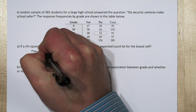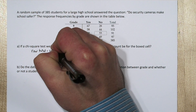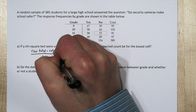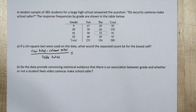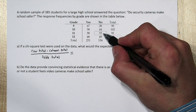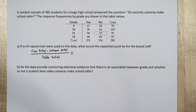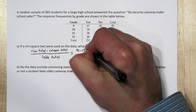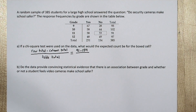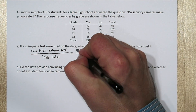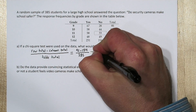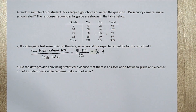To calculate the expected cell counts for these types of chi-square tests, we use this formula: row total times column total divided by table total. So for this cell 33, our row total is 91, since there were 91 eleventh graders, and there was a total of 154 people who said no. If we divide this by the total, 385, we get our expected cell count of 36.4.